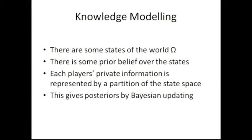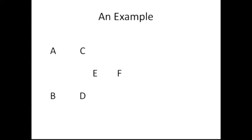The broad framework is a bit similar to what Matthew talked about yesterday. We talk about a set of states of the world — we call it omega — where each state is considered a full representation of the world. Each player has some prior beliefs over that set, so there are before-the-fact beliefs. Then we receive some private information, which we represent through partitions, and through a process of Bayesian updating we produce posteriors. This is all a pretty standard setup.